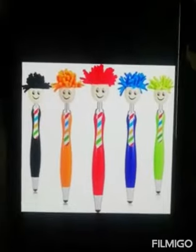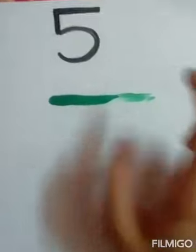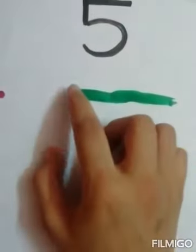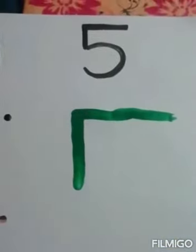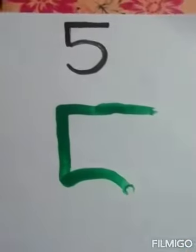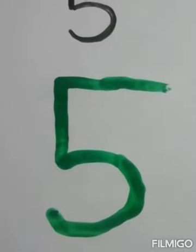So now we will do our activity. So now we will draw 5. We will dip our finger in watercolor like this. And then we will draw first a sleeping line, then a standing line, and then a half curve.